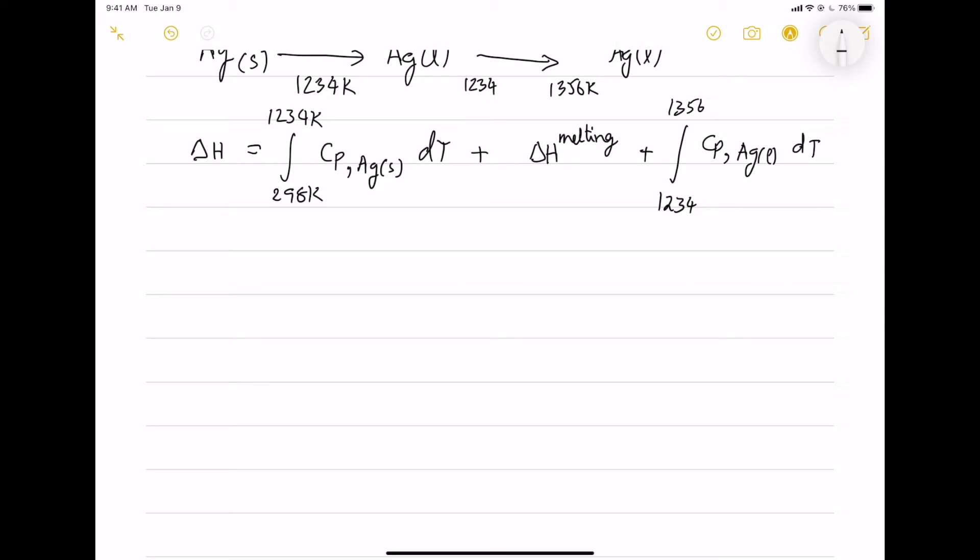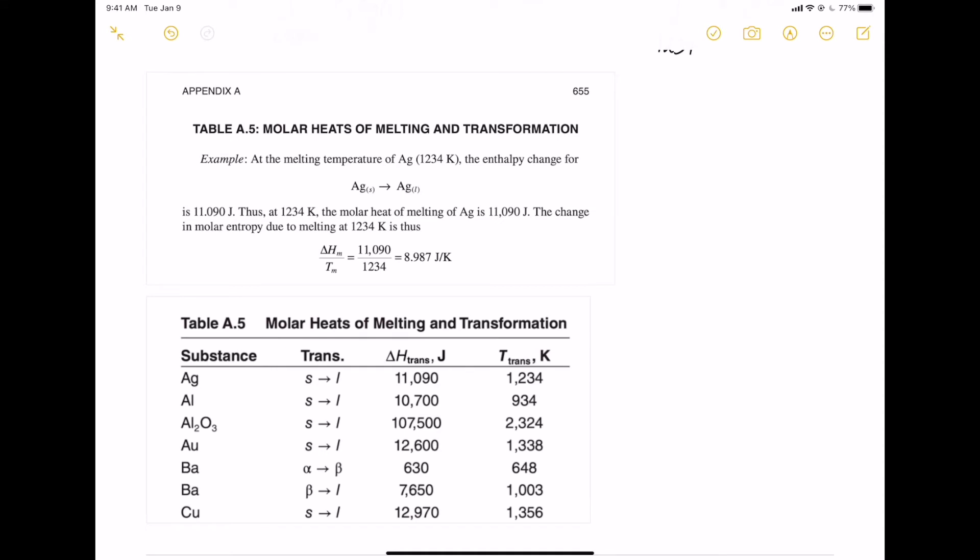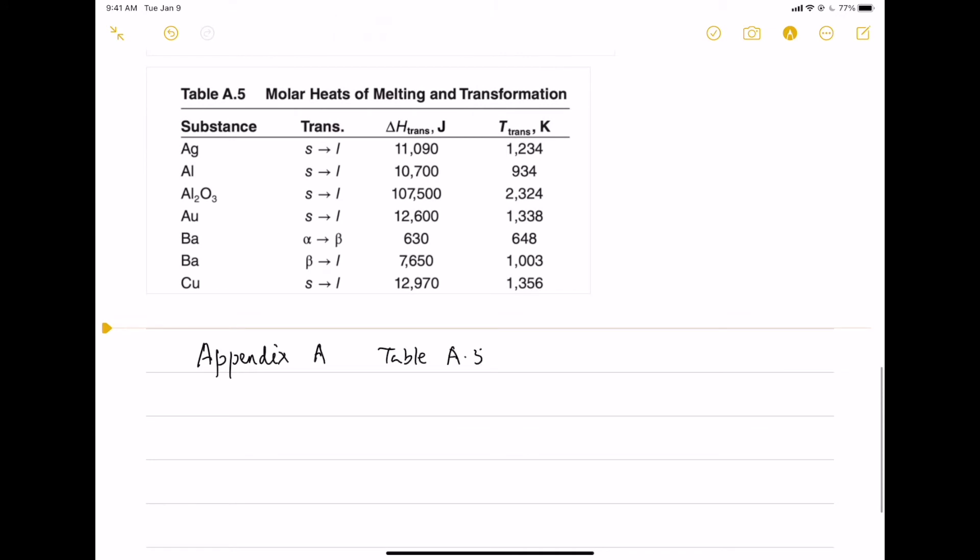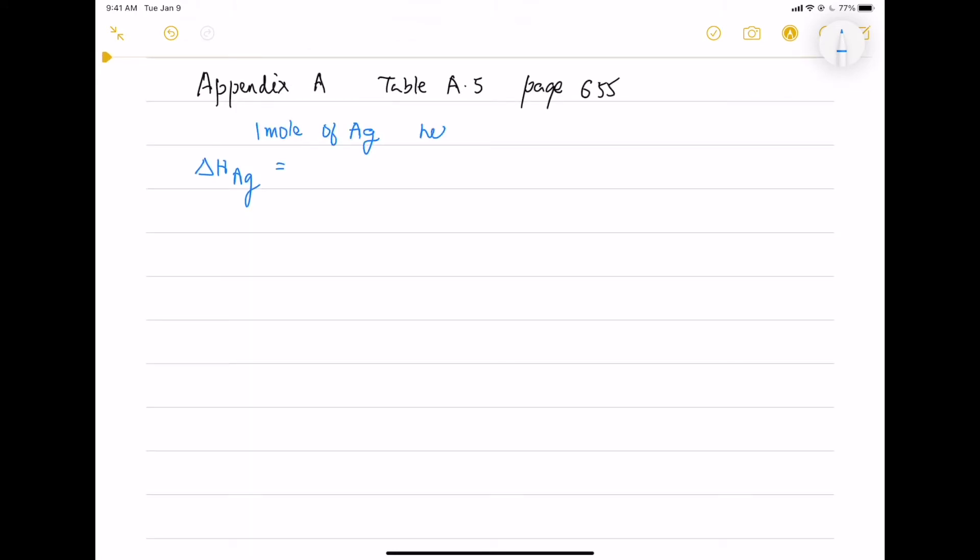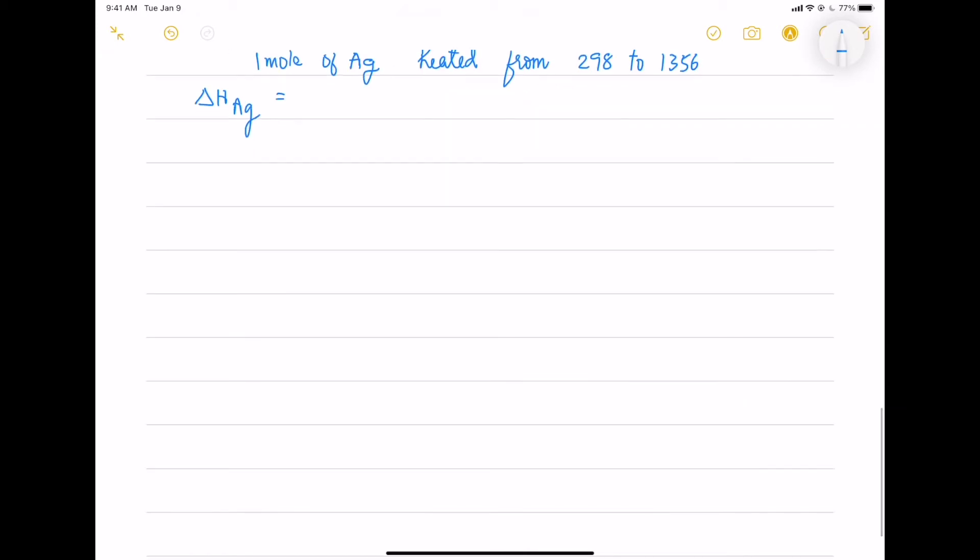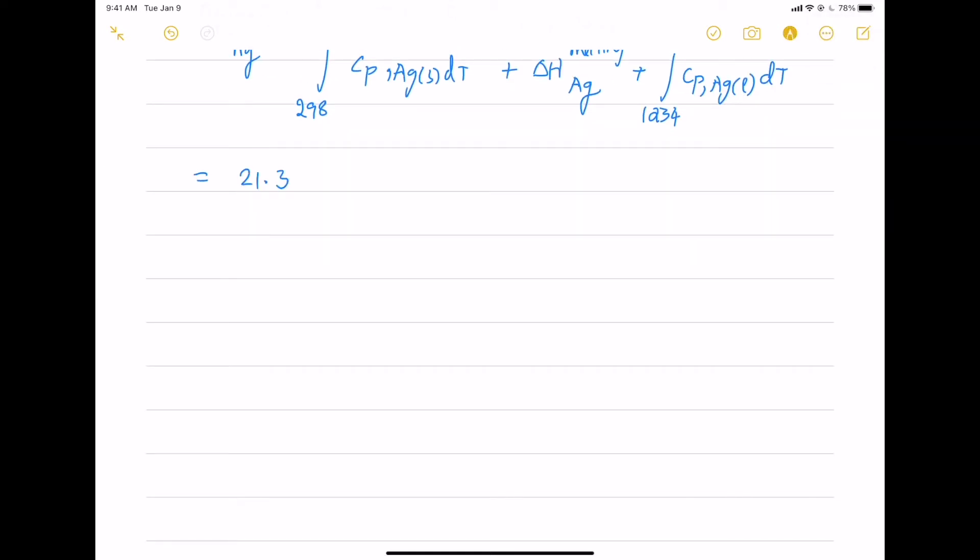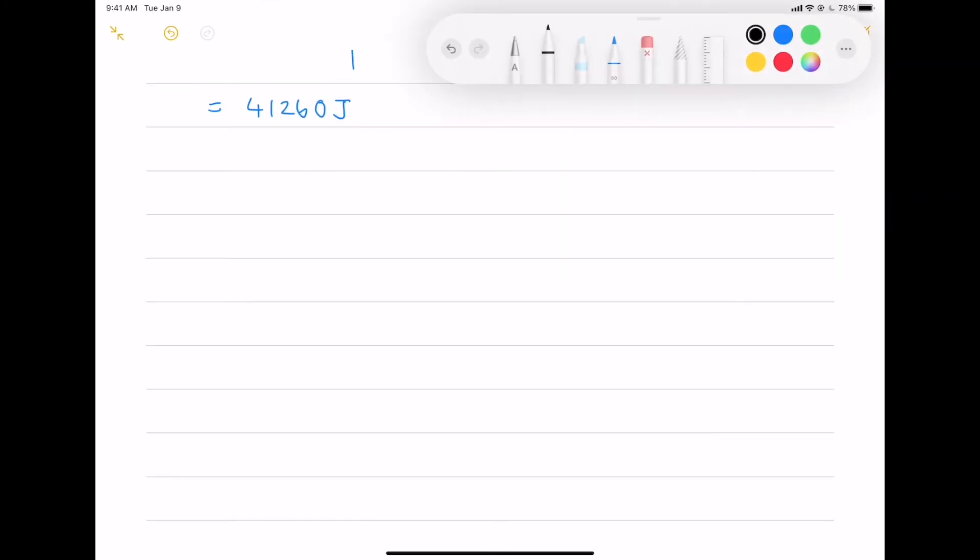One is from solid heating, then melting and solid to liquid transition. So to get the molar heat of melting, we go to Table A.5 and we get the silver melting from solid to liquid and copper melting from solid to liquid. So for the delta H of 1 mole of silver heated from 298 to 1356 Kelvin, we do the integration as discussed before. So after putting the numerical values and integrating and then inputting the intervals for the solid, the melting transition and for the liquid heating, we get the delta H of 4126 J.